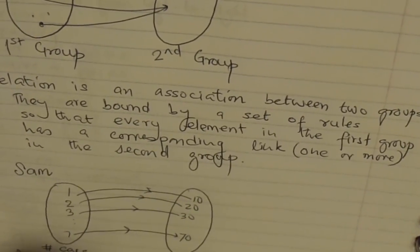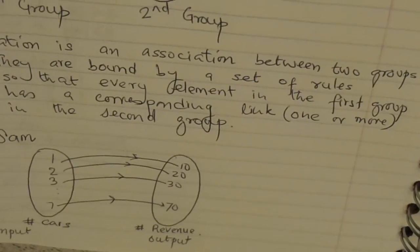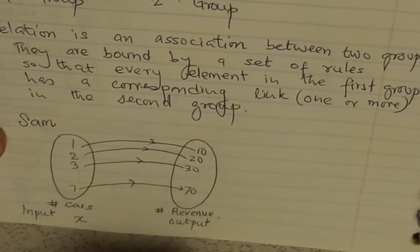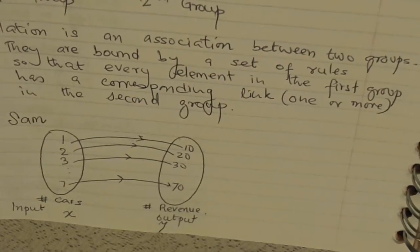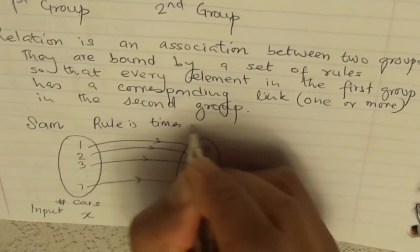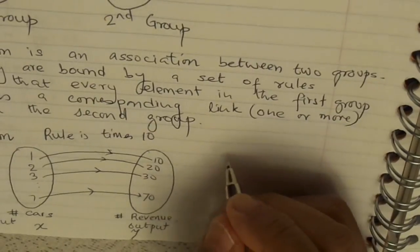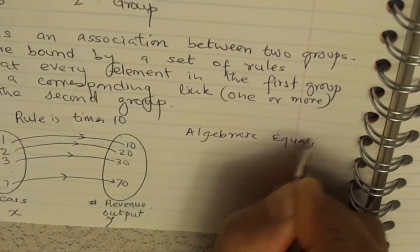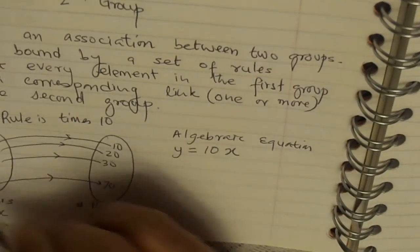We will call Group 1 as the input and Group 2 as the output. Let each element in Group 1 be represented by variable x, and every element in Group 2 be represented by variable y. The rule which binds them is times 10. This mapping diagram can be represented in the form of an algebraic equation: y equals 10x. We see this is a one-to-one relation.